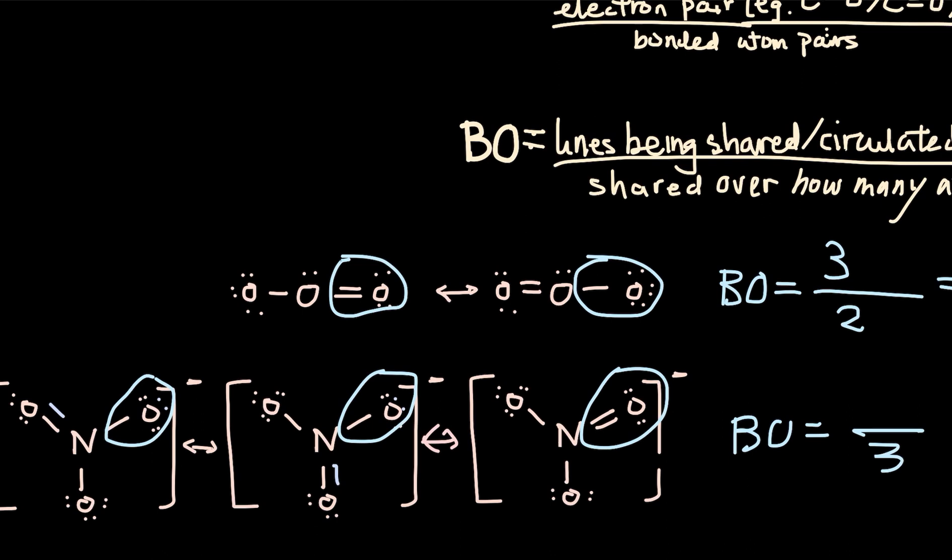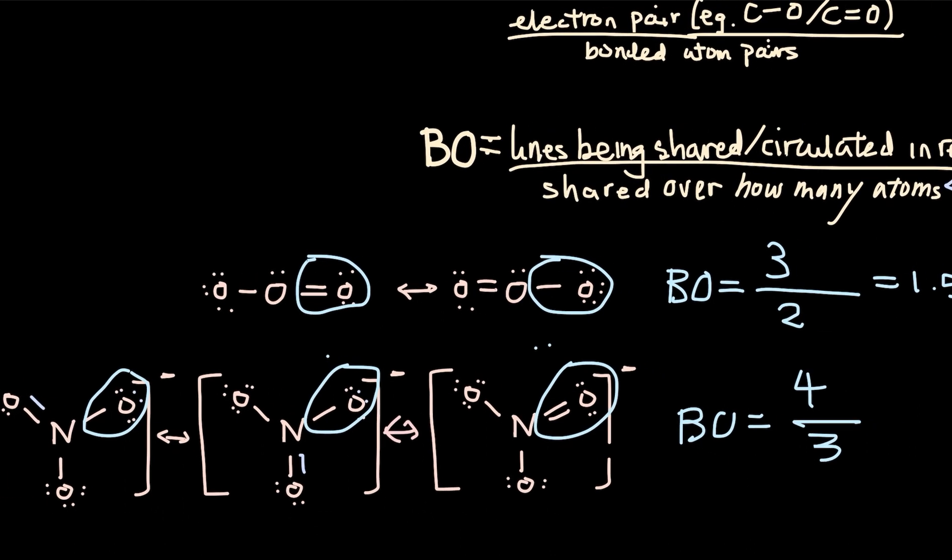So we see that there is one, two, and then two more. So that's going to be four total lines, four total electron pairs that are being shared throughout this resonance structure.